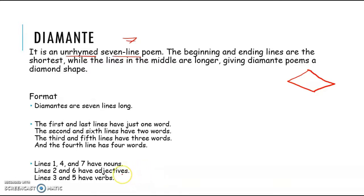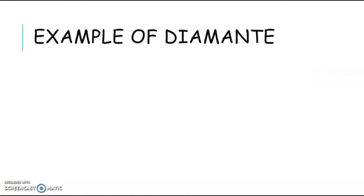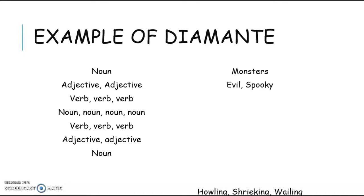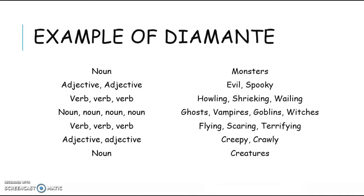Now I am going to show you several examples of how we can use the format to write Diamante. So here is the example. We have noun, followed by adjective, verb, noun, verb, adjective, and lastly the noun. So we have a Diamante about monsters. Monsters is the noun. Evil and spooky are the adjectives that describe the noun monster. When we talk about monsters, the adjectives that come to mind are evil and spooky.